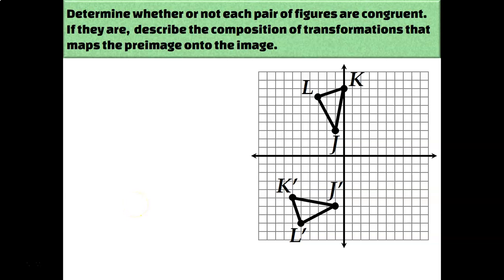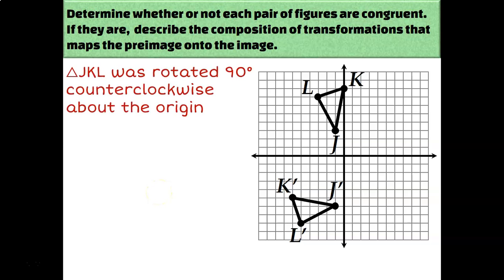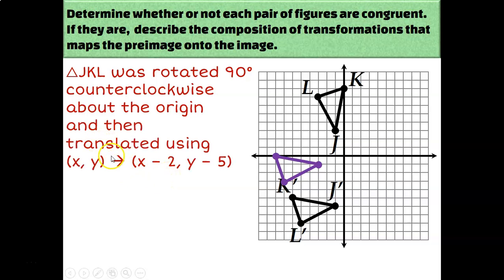Looking at these two triangles, they're clearly in different orientations. The pre-image has point J pointing down, whereas on the image J' is pointing to the right. This looks like a rotation of 90 degrees counterclockwise, because I went approximately one quadrant away and opposite the direction of the clock. So if I rotate triangle JKL 90 degrees counterclockwise about the origin, it would end up right here — using the rule for 90-degree counterclockwise rotations: negative y, positive x. This is now in the correct orientation, but I need to move it right 2 and down 5, so I also need to translate using the rule x plus 2, y minus 5. Since I only used rotations and translations, I can conclude those two triangles must be congruent.